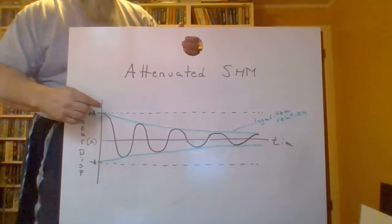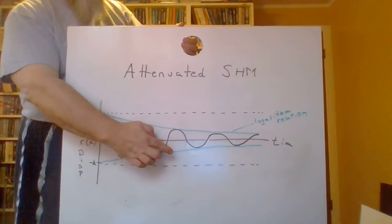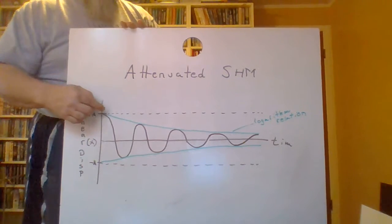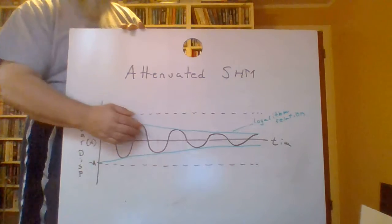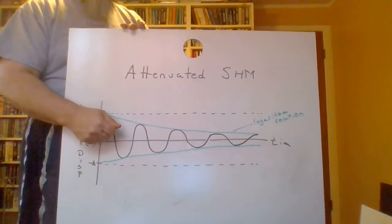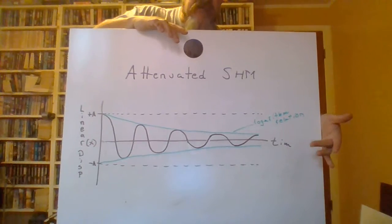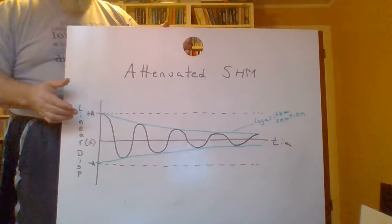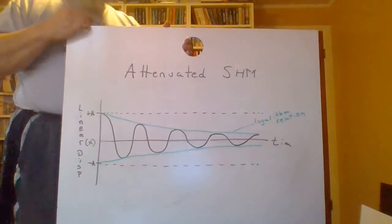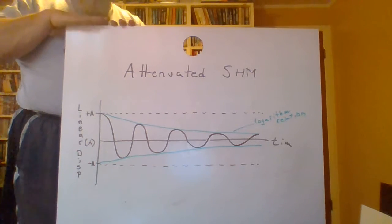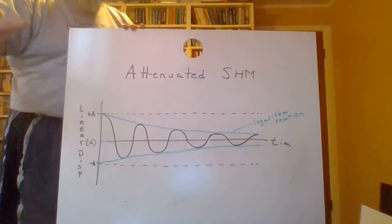Slowly over time, the amplitude decays — not only the amplitude in one direction, but in both directions. The amplitude it would have ideally is the dashed line. But because it's experiencing some amount of friction, over time it decays. Eventually you'd get to a point where you'd barely notice it vibrating back and forth, but it still might be vibrating.